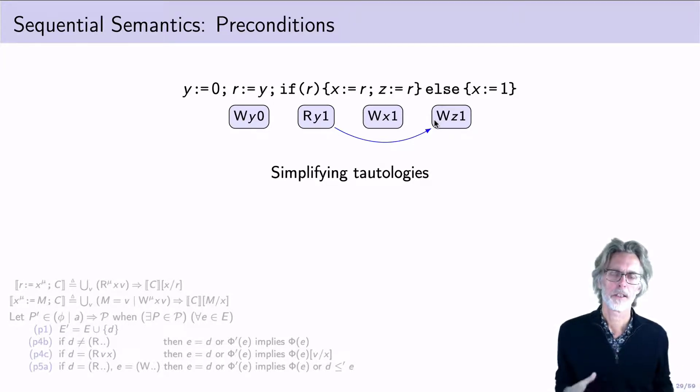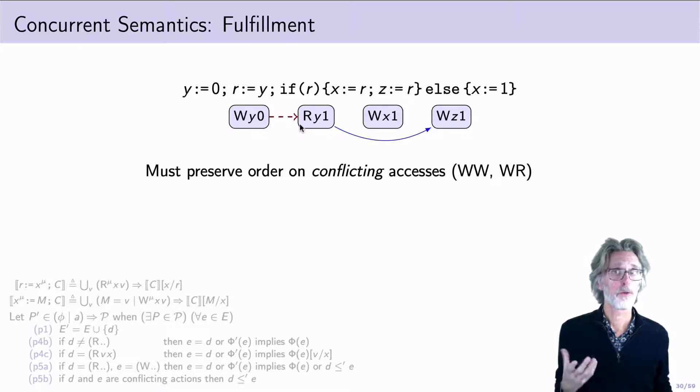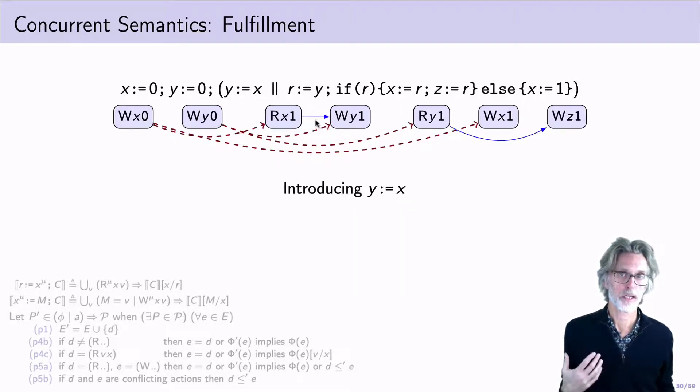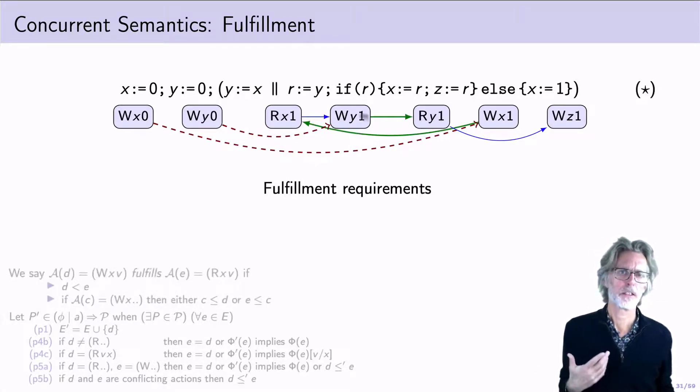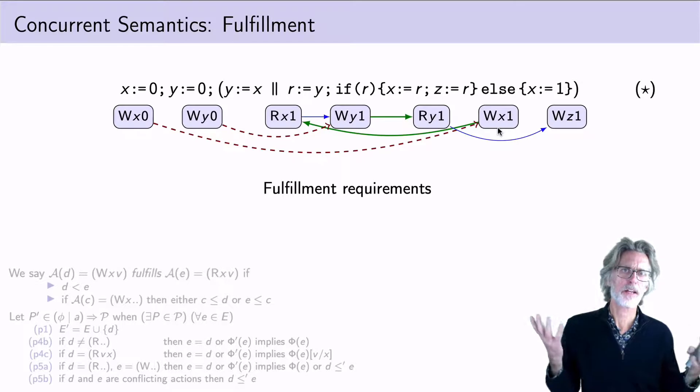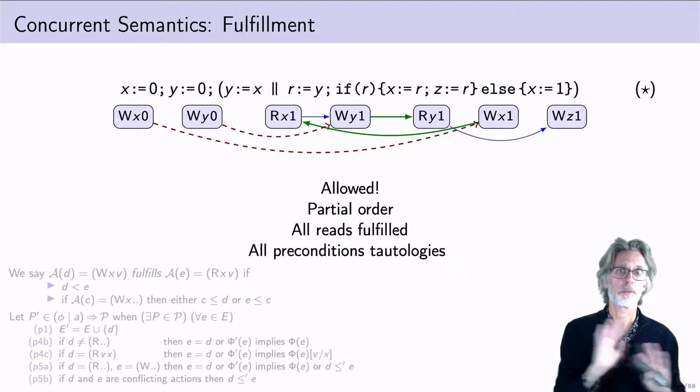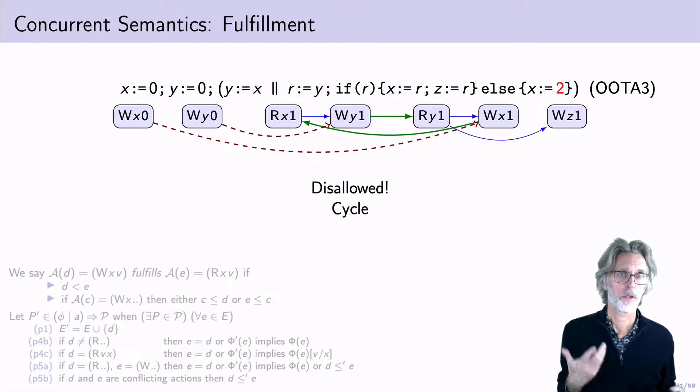So, looking at fulfillment, we first note that we need to preserve program order between conflicting accesses, such as those to y here. We also need to initialize all of our variables. In order to fulfill y, I need to add another thread, which will actually give me the value I'm looking for. And we need to follow the requirements for fulfillment to fulfill those reads. Once I've done this, I've actually got the POM set for STAR, the program that we saw earlier. This POM set is allowed because it is a partial order, there's no cycles, and all of the reads are fulfilled, and all of the preconditions are tautologies. Note that UTA3 is disallowed because of the evident cycle.